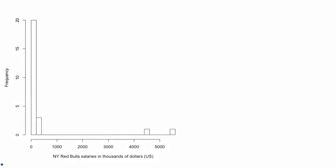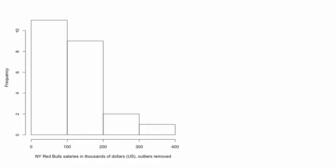We can also look at the histogram for the 2012 salaries of the New York Red Bulls soccer team. The key feature of these data is the large gap between the salaries of the two players with the highest salaries — Marquez and Henri — and the 23 other players on the team. The salaries of Marquez and Henri are outliers. If we remove Marquez and Henri from the data, we can look at the distribution of salaries for the remaining 23 players. Players' salaries are bounded from below by a minimum that is imposed by the league. The resulting distribution of salaries is right skewed.